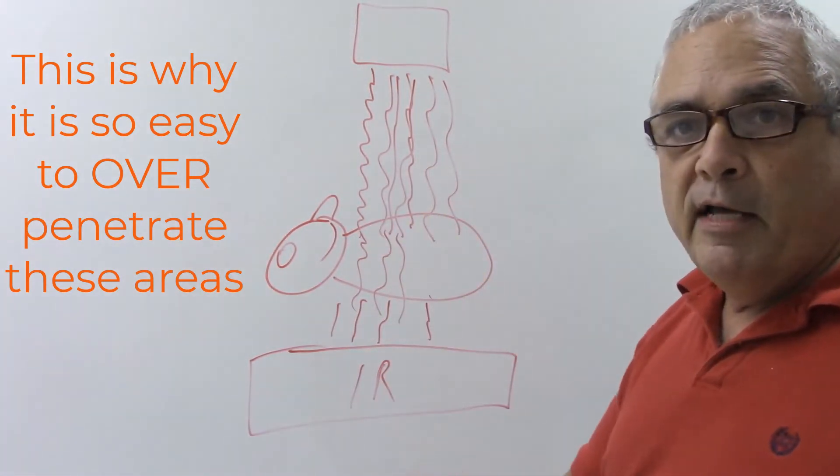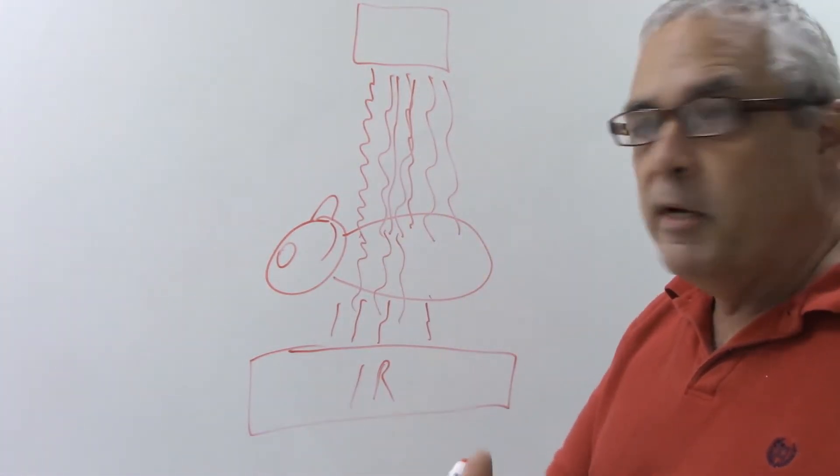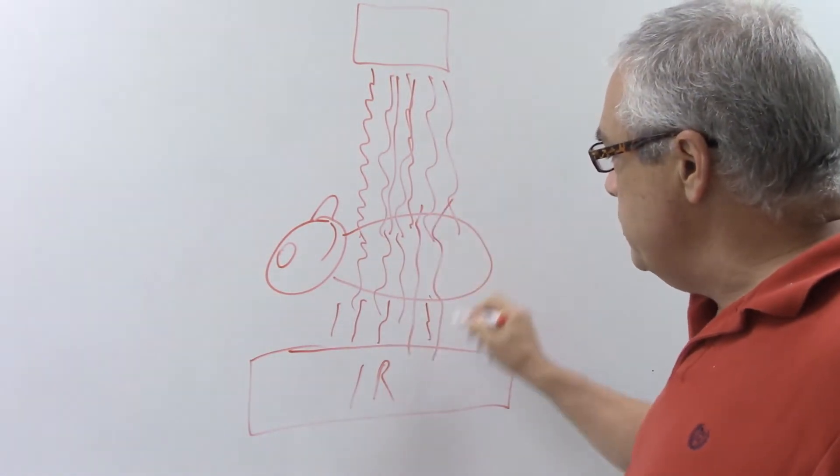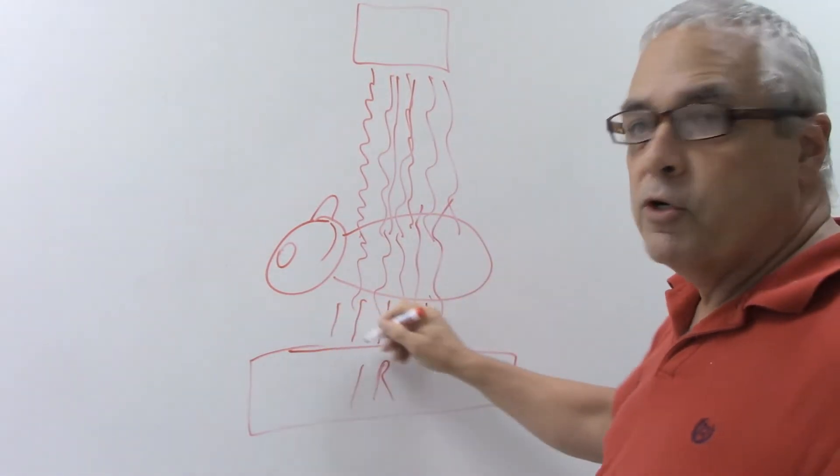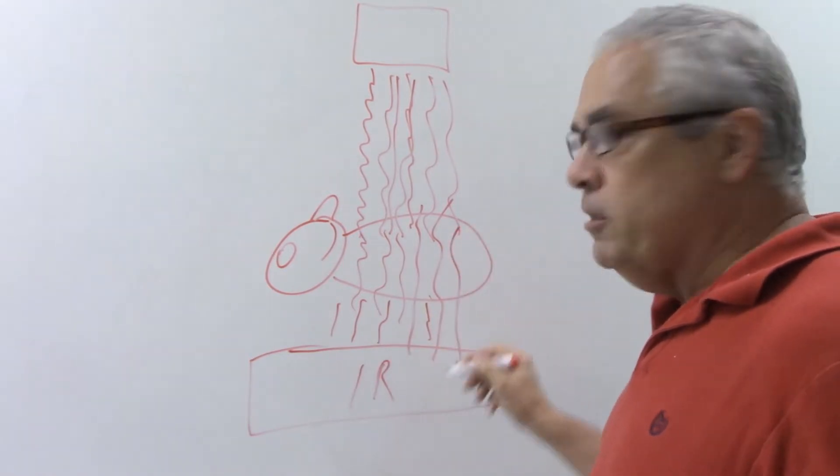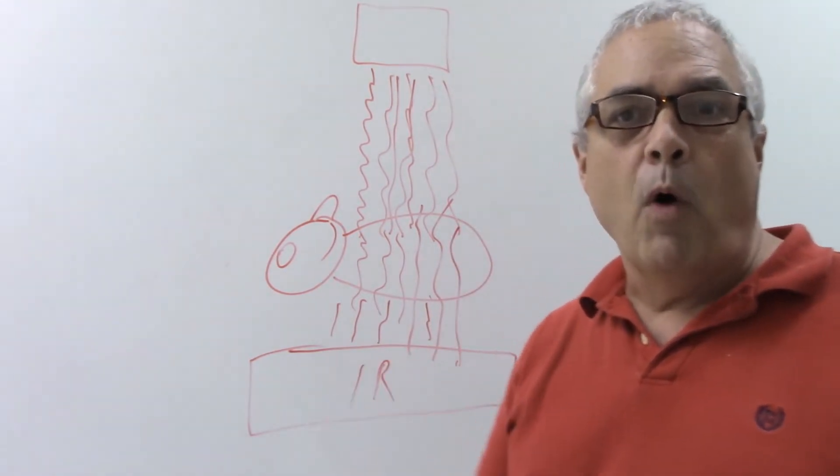So anywhere I've got lung tissue, air, fat, it was dark the first time, it's going to be dark again. But this time, ribs, spine, any kind of bones, dense muscle, that's going to get penetrated a little more easily. So I'm going to have a lot more shades of gray here and a lot less just stark whites.